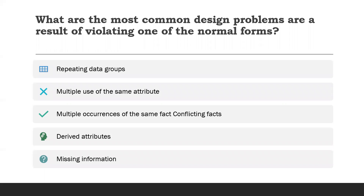What are the most common design problems resulting from violating one of the normal forms? They are: repeating data groups, multiple use of the same attribute, multiple occurrences of the same fact or conflicting facts, derived attributes, and missing information.